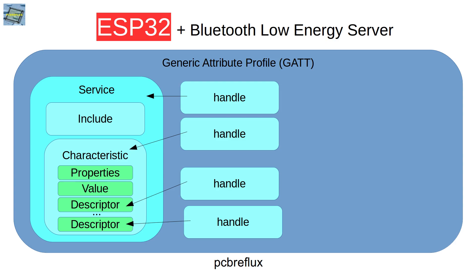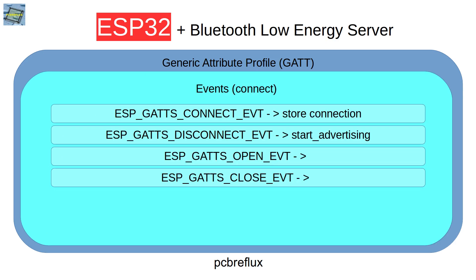When we get the add characteristic descriptor event, we can add more characteristics to our service. For every event, we also receive a Bluetooth handle, and that handle is directly connected to our service, the characteristic, and also the descriptor. We must remember this handle because when an event arrives, we only know it is for a specific handle. There are also events for the connect phase: the connect event, the disconnect event, and also open and close events.